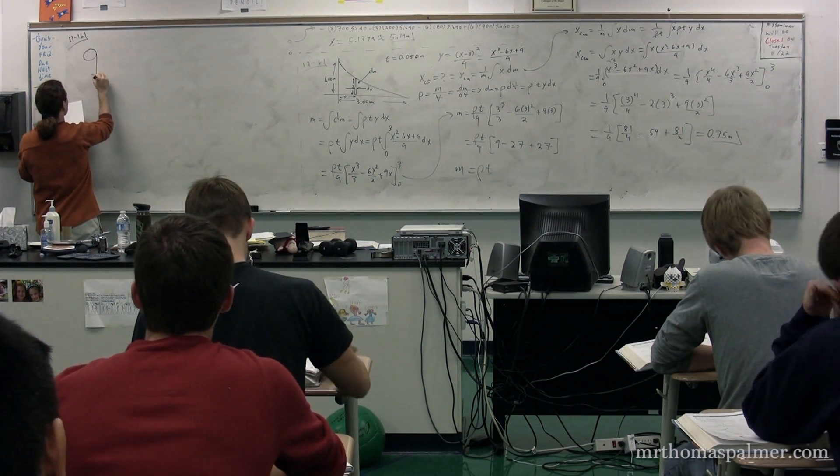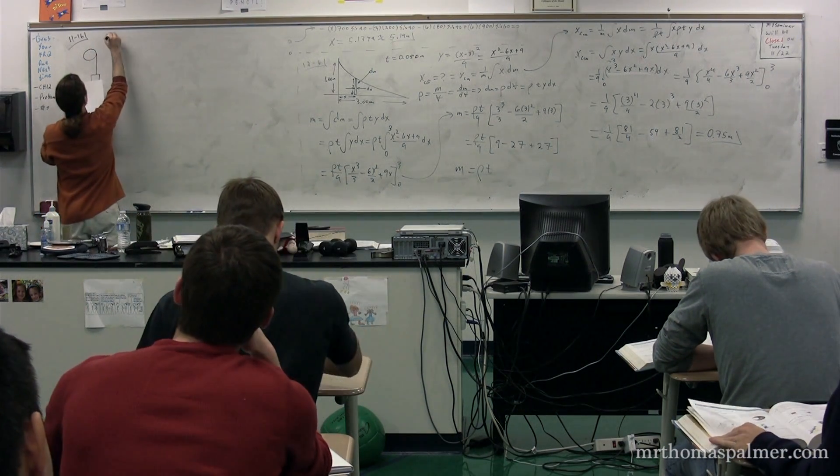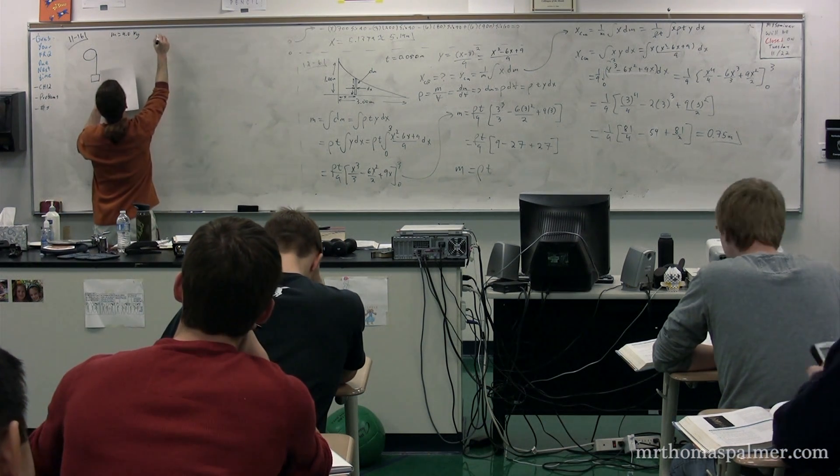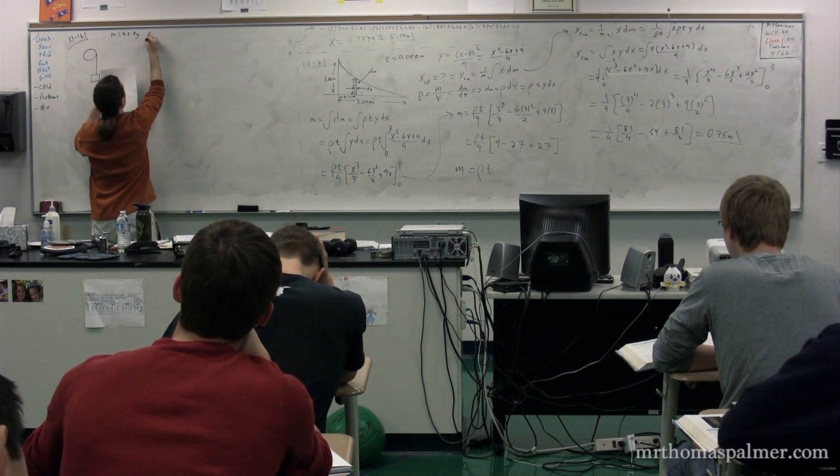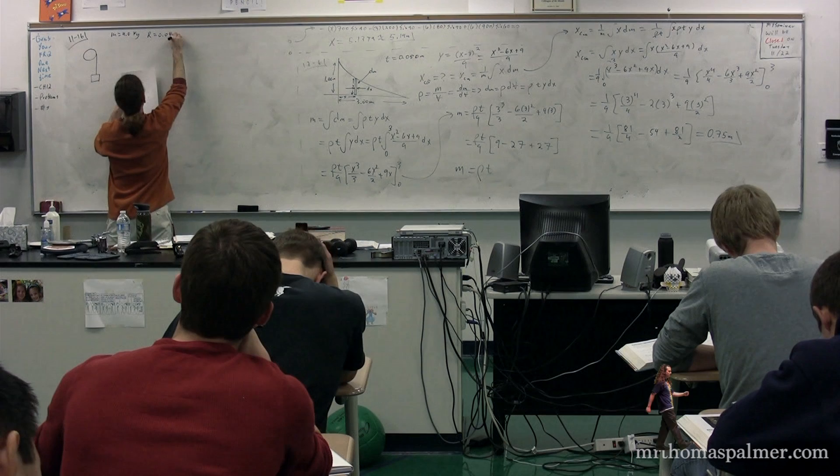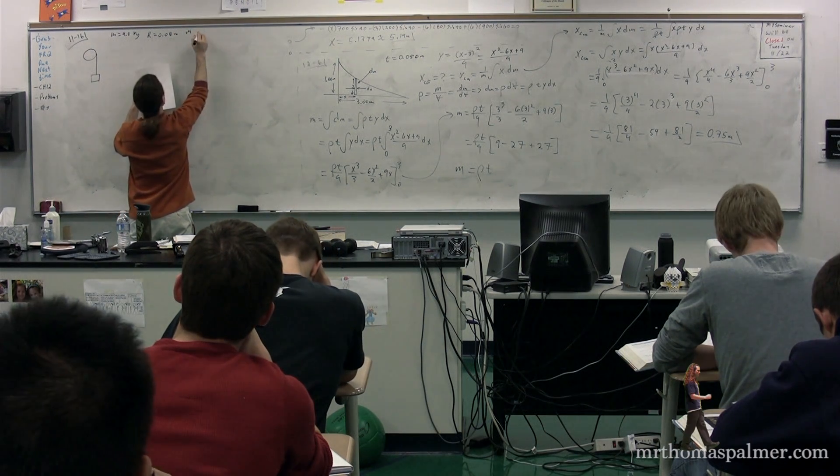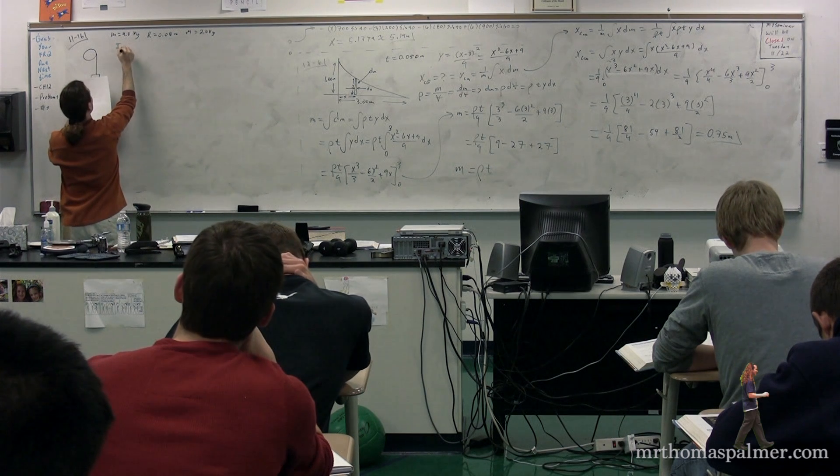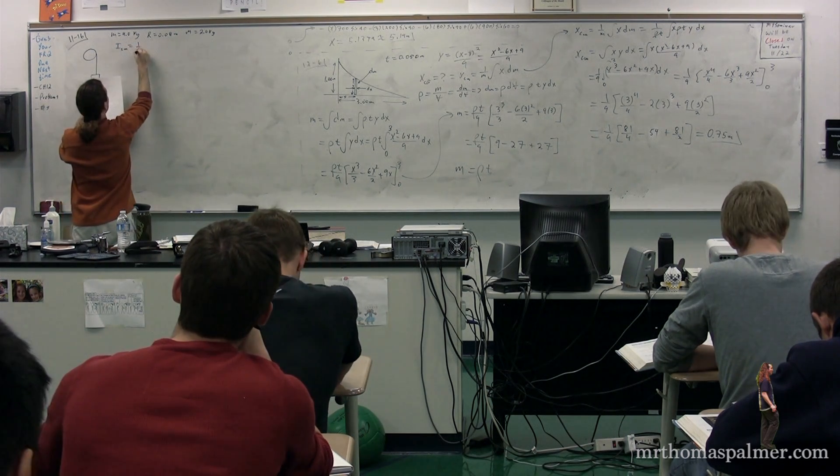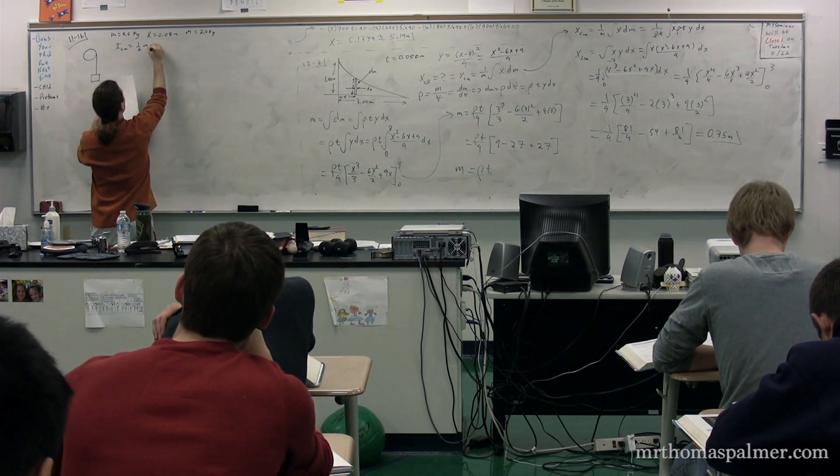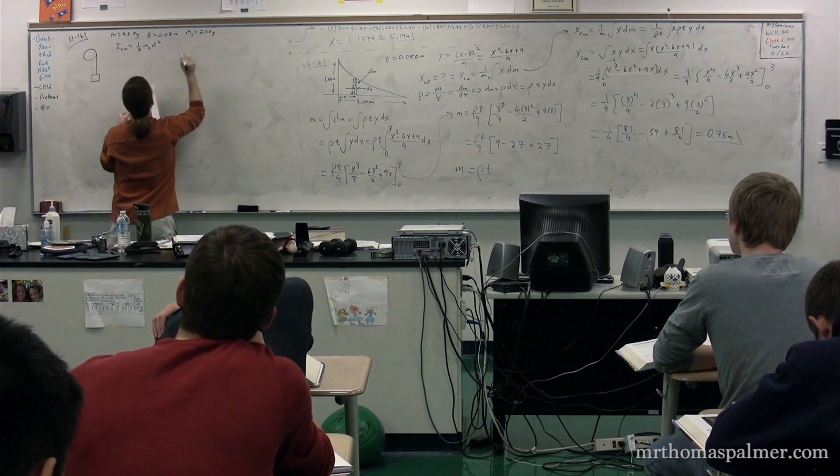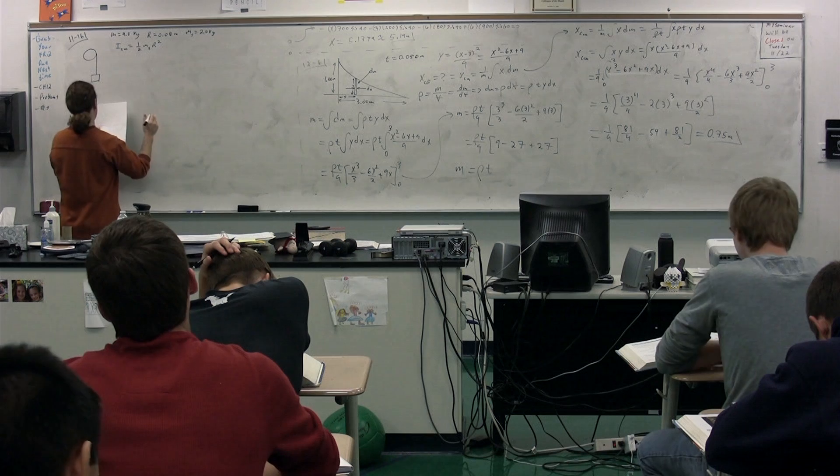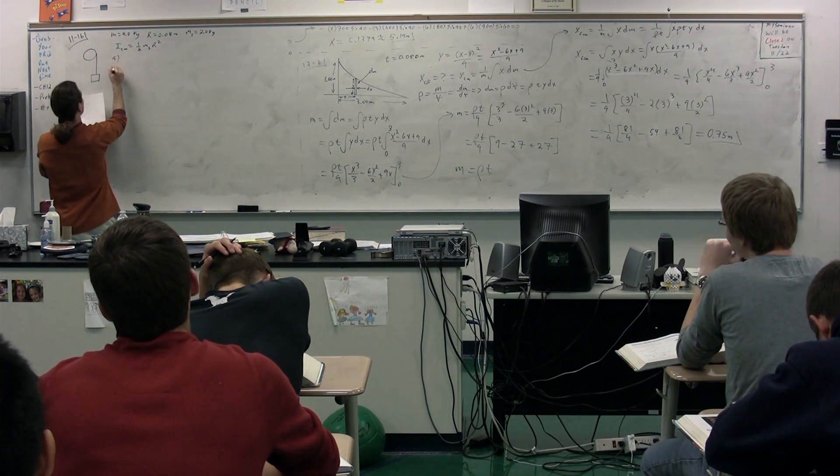A 4-kilogram counterweight is attached to a light cord which is wound around the spool. The spool is a uniform solid cylinder of radius 8 centimeters and mass 2 kilograms. Part A: What is the net torque on the system about point O? Part B: When the counterweight has speed V, the pulley has angular speed omega equals velocity over radius. Determine the total angular momentum of the system about O. Part C: Using the fact that torque equals the derivative of angular momentum with respect to time, and your result from B, calculate the acceleration of the counterweight.